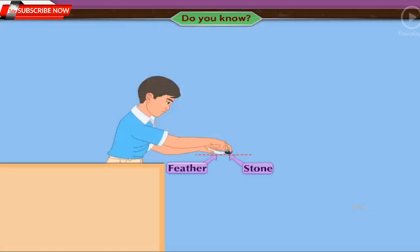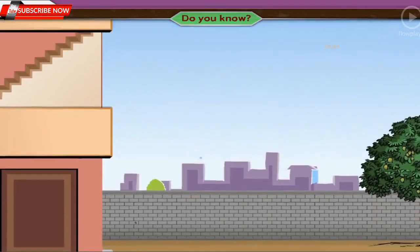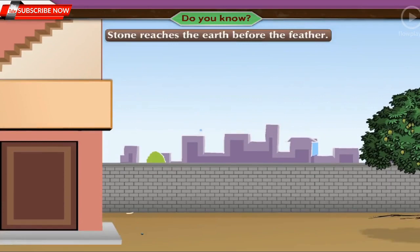When we drop a feather and a heavy stone from a height at the same time, they do not reach the earth at the same time. The heavy stone reaches the earth before the feather.